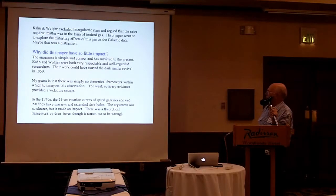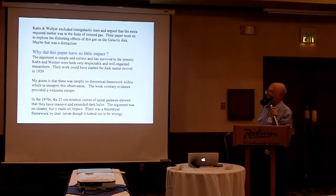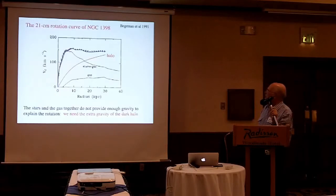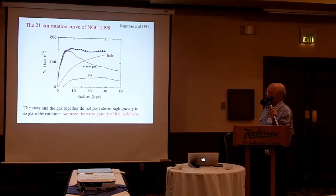In the 1970s the dark matter revival started, coming from 21-centimetre rotation curves of spiral galaxies, which showed very clearly that they had massive and extended dark halos. The argument was really no clearer than Kahn and Woltjer's argument, but it did make an impact. The reason it made an impact was that there was a theoretical framework at that point for discussing dark matter, even though the theoretical framework turned out to be wrong. This is a 21-centimetre rotation curve of a particular spiral: this is how rotation goes with radius, this is what you expect from stars and gas together, and you need an extra dark halo contribution to match the observed rotation curve.